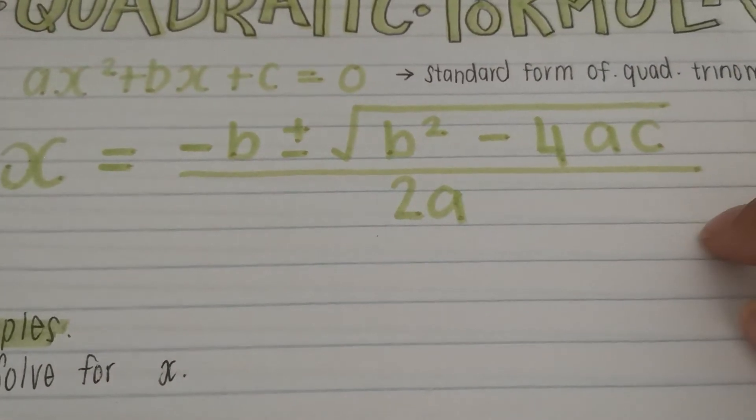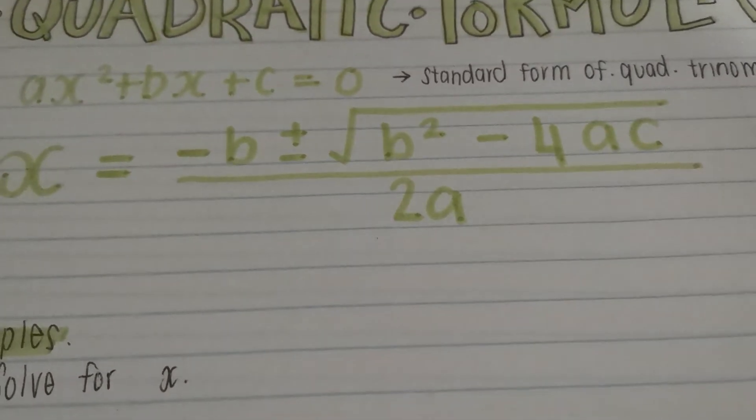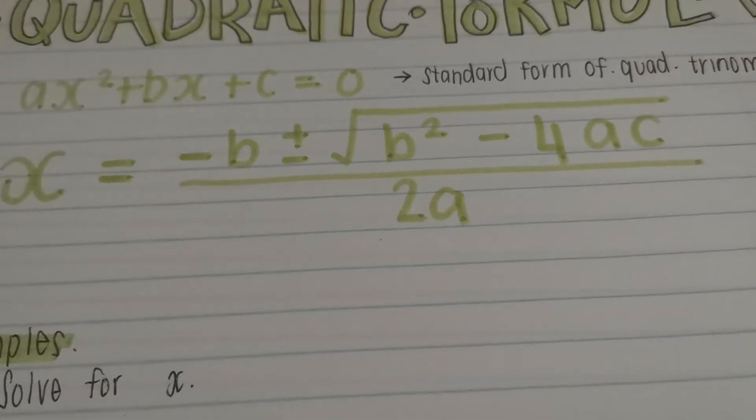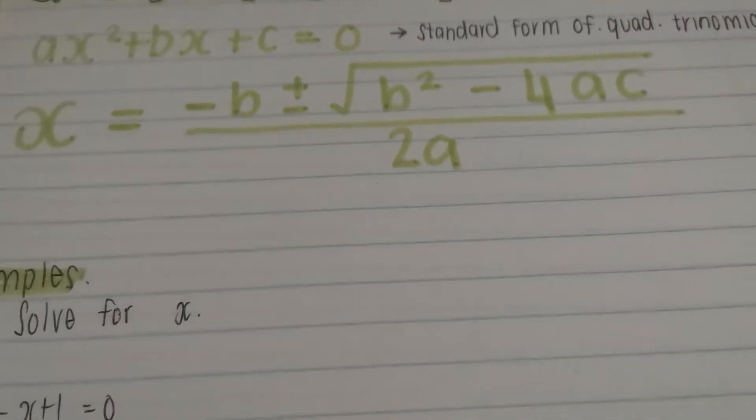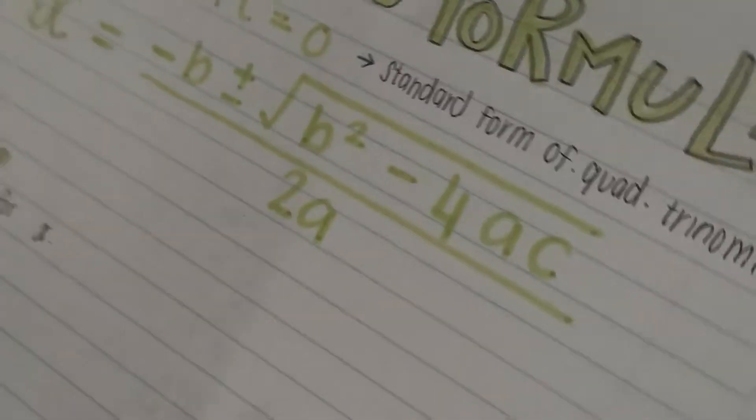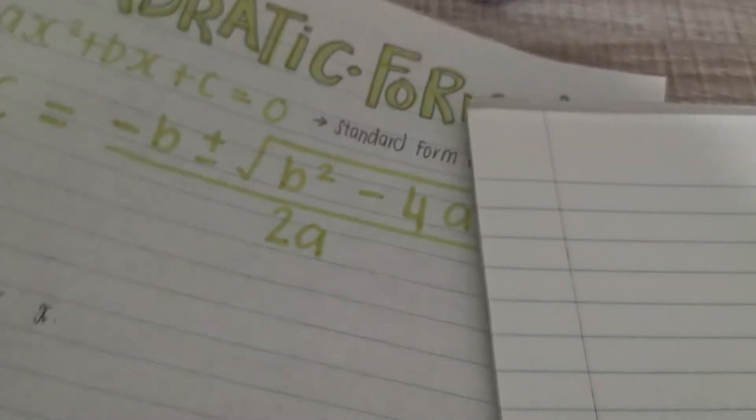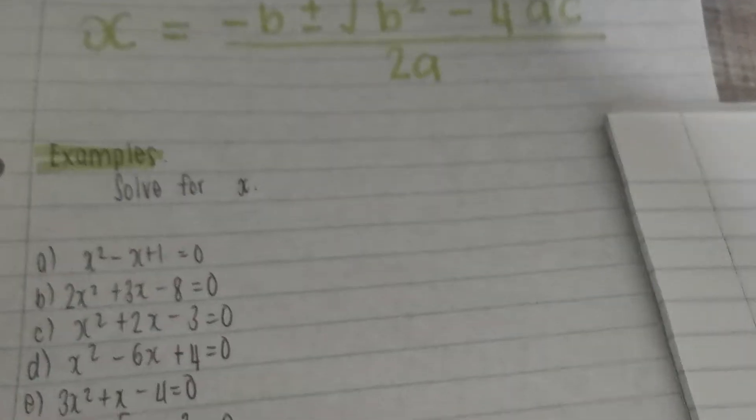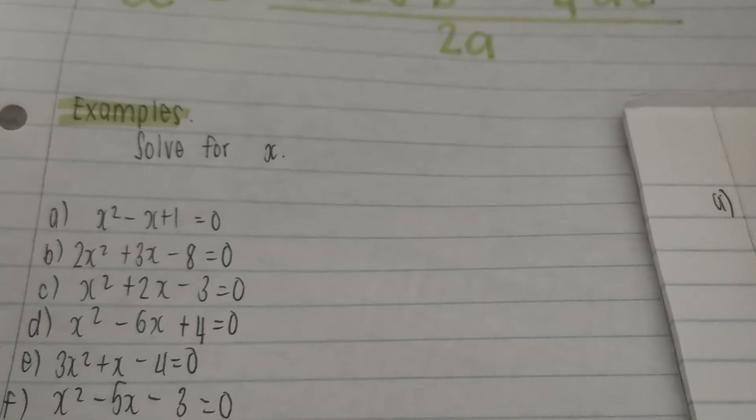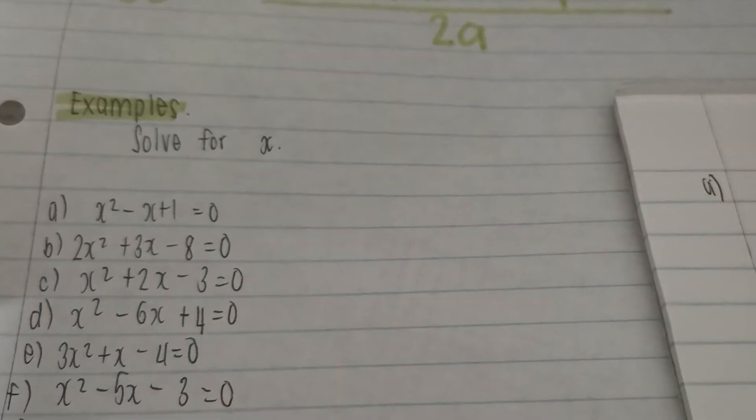You should also know that when you are substituting, you substitute into brackets. Let's show you an example. Here's my example. It says solve for x. My first question says x squared minus x plus 1 equals 0. You always double-check that this is in standard form.